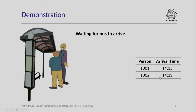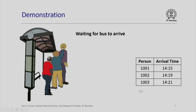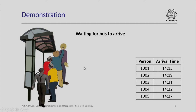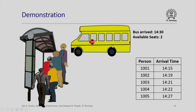Here is another person who comes in — let us assume that he arrives at 14 hours 19 minutes. Here is a third person who arrives at 1421. Note that we are giving an arbitrary increasing tag to each person who arrives at the queue. Here is the fourth person and here is the fifth person. Note that so far no bus has come — all of them are waiting for the bus to arrive. Next comes a bus, which arrives at 1430, again an arbitrary time.